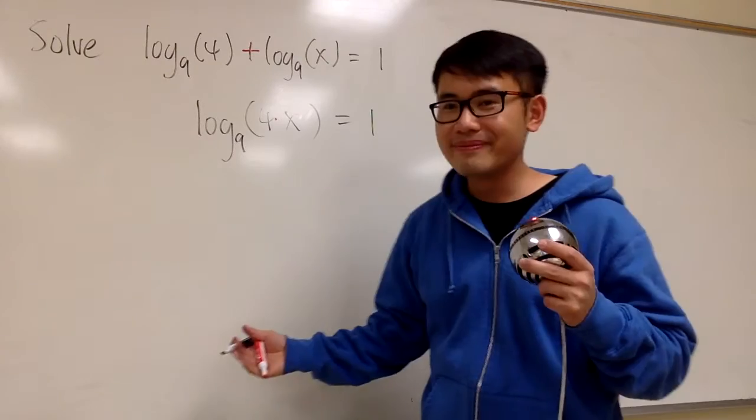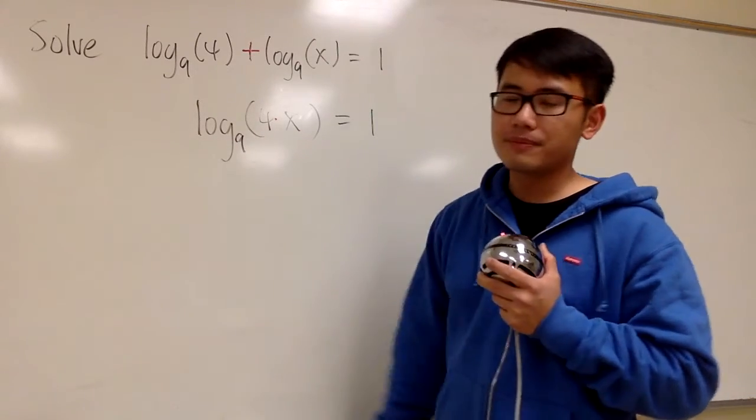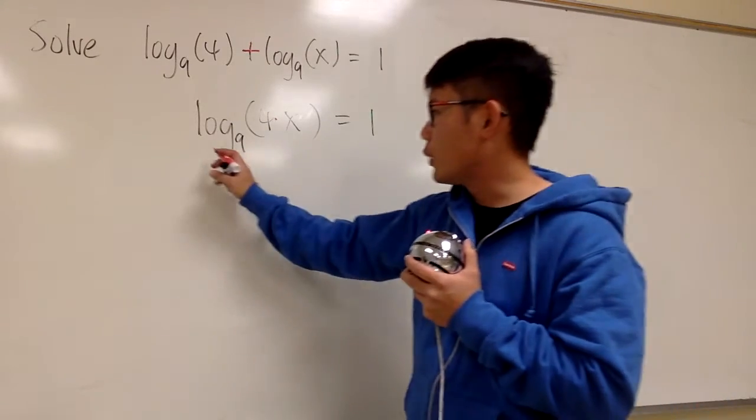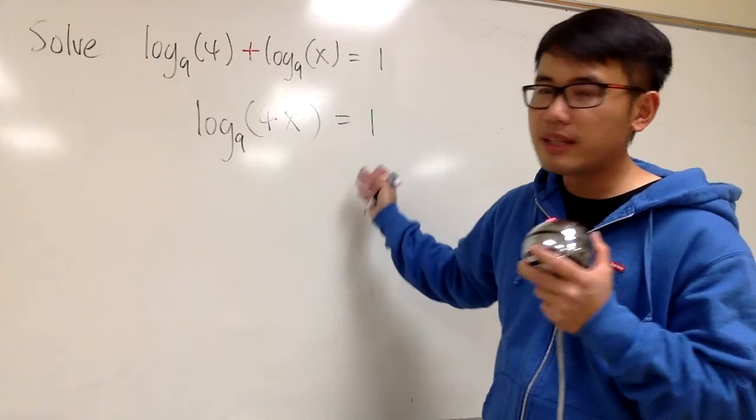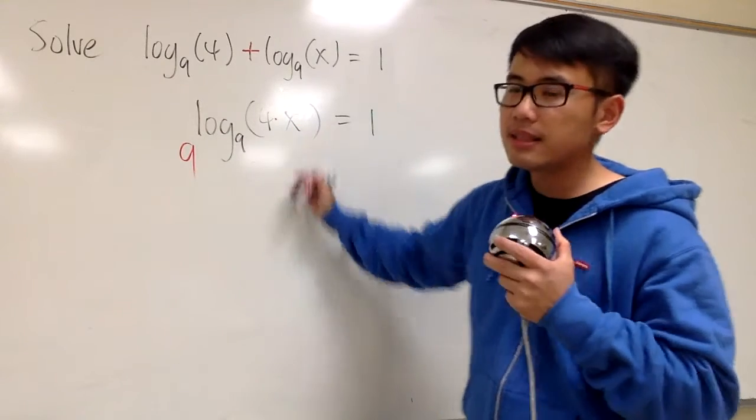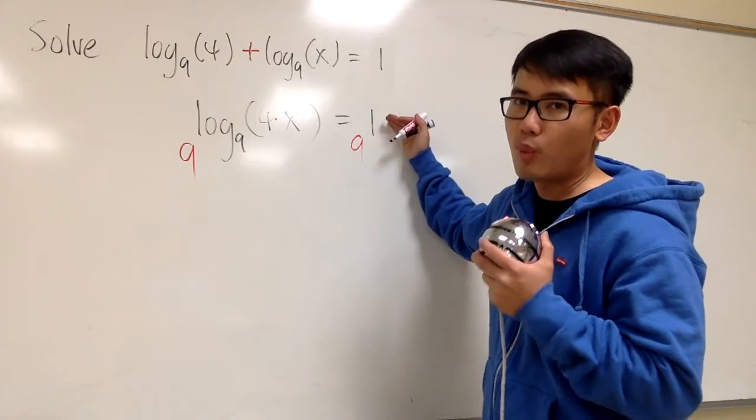And now what? We have a log equation. The x is inside of the log. The base right here is 9. So what I would like to do is, I will pretend both sides are the exponents, and look at the base 9. I will do 9 to this exponent. I will also do this as 9 to the exponent 1.